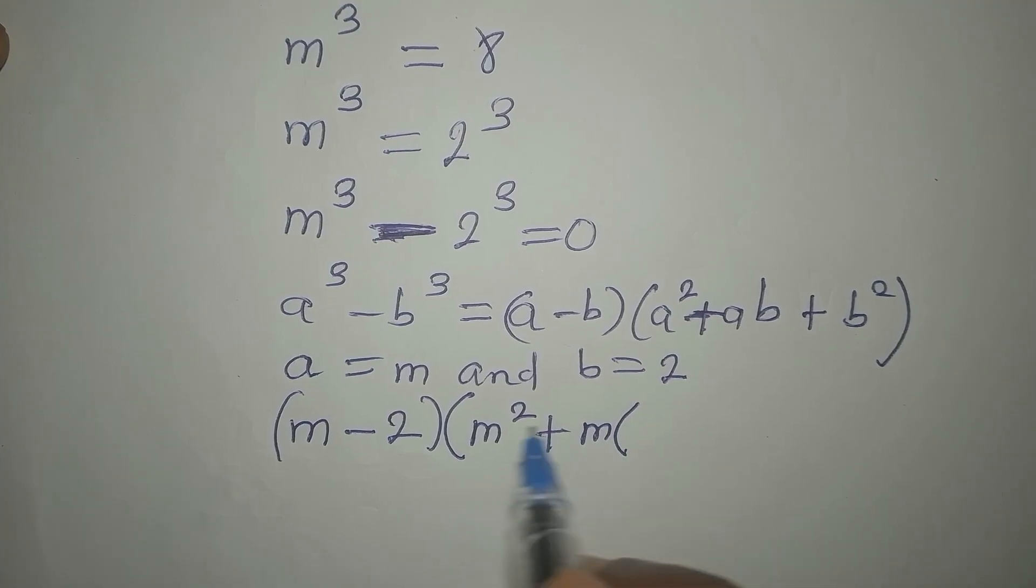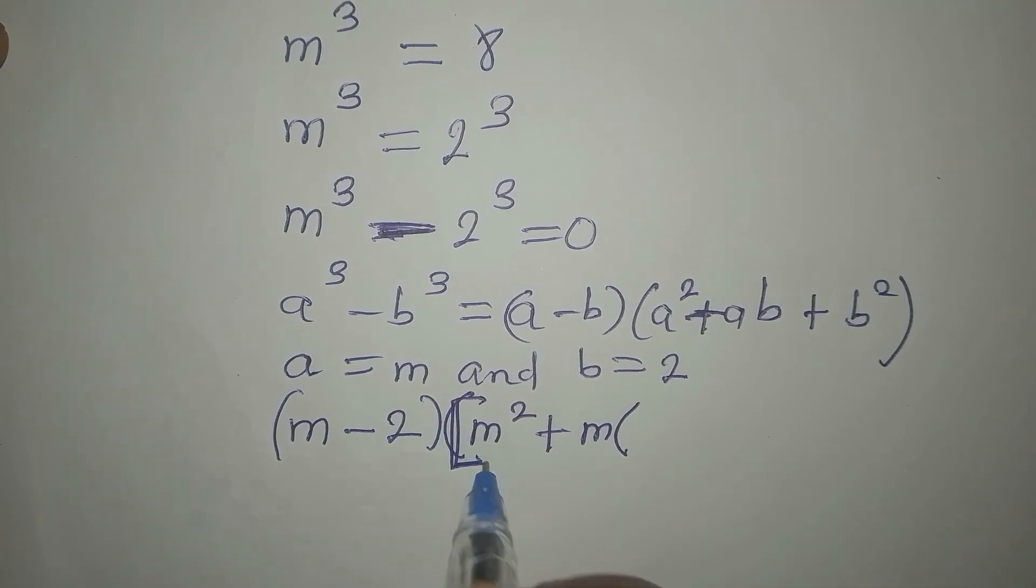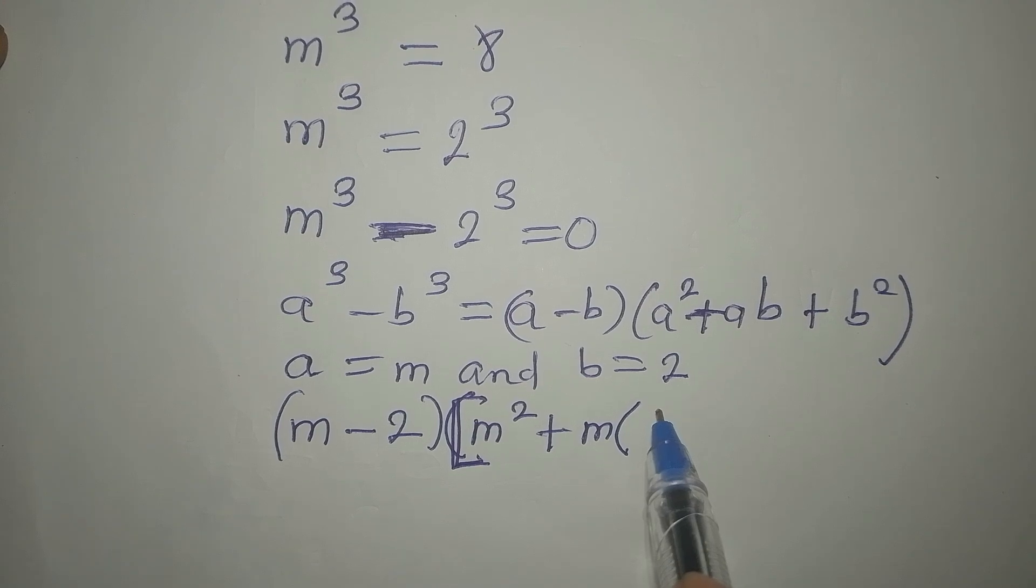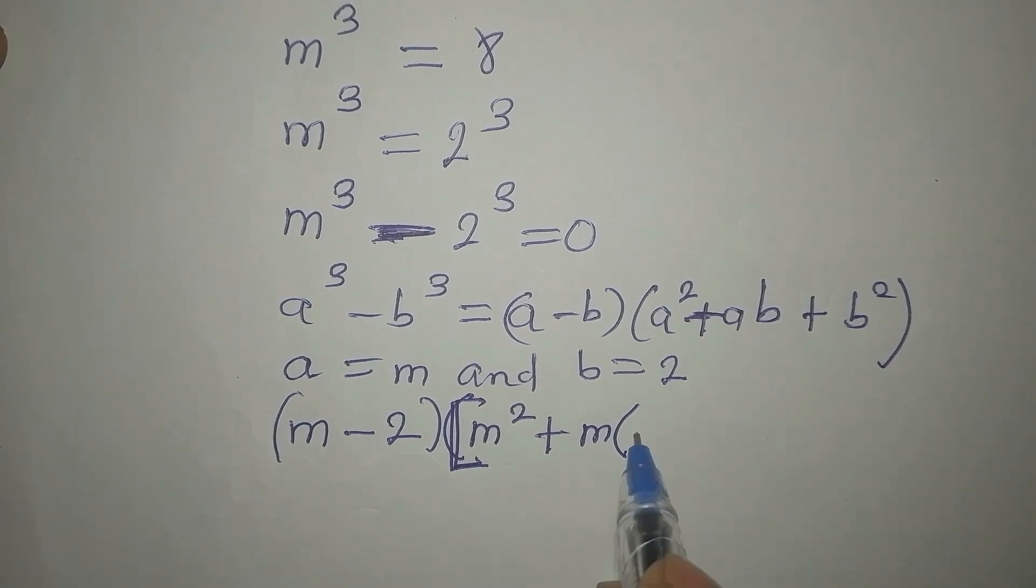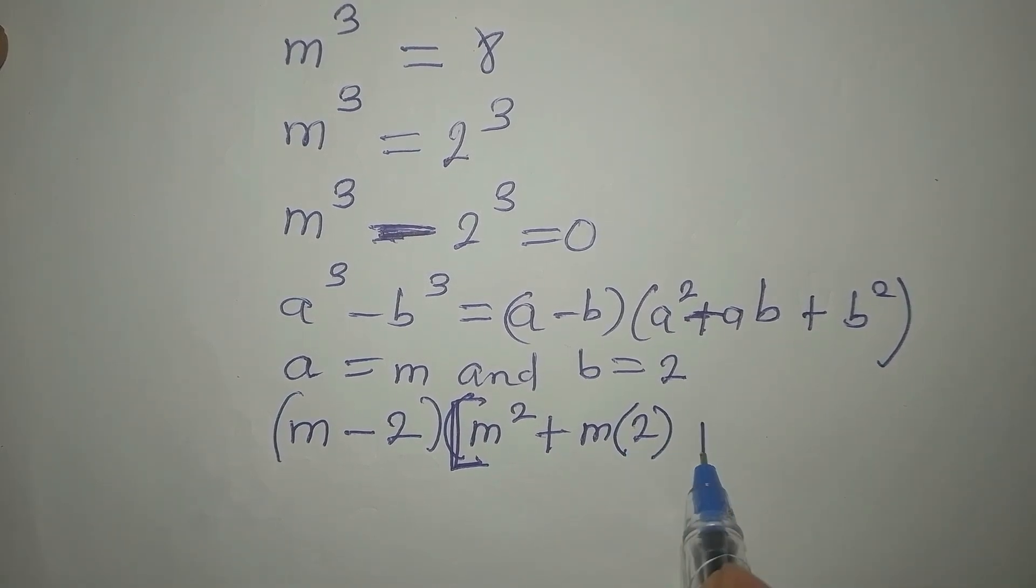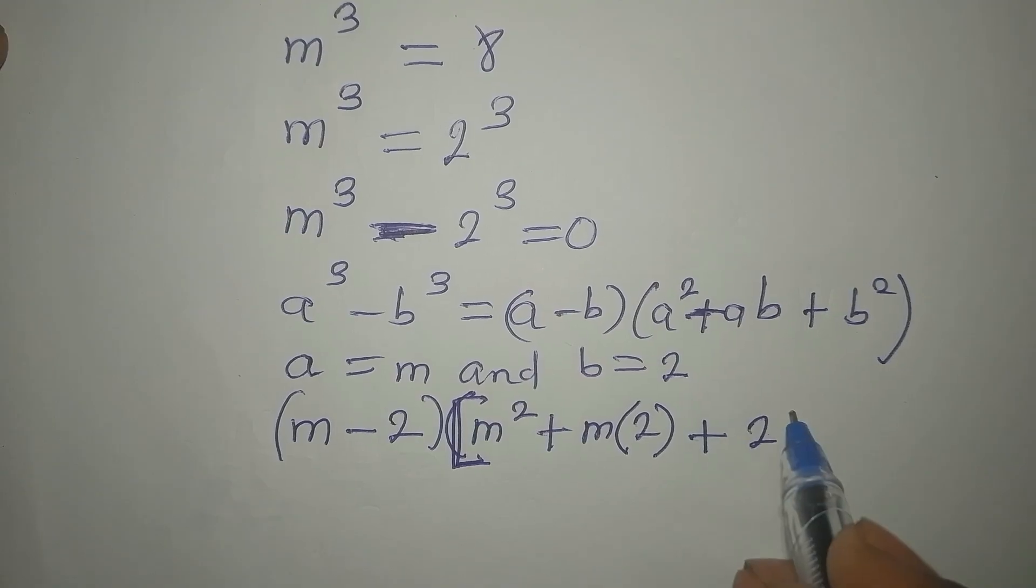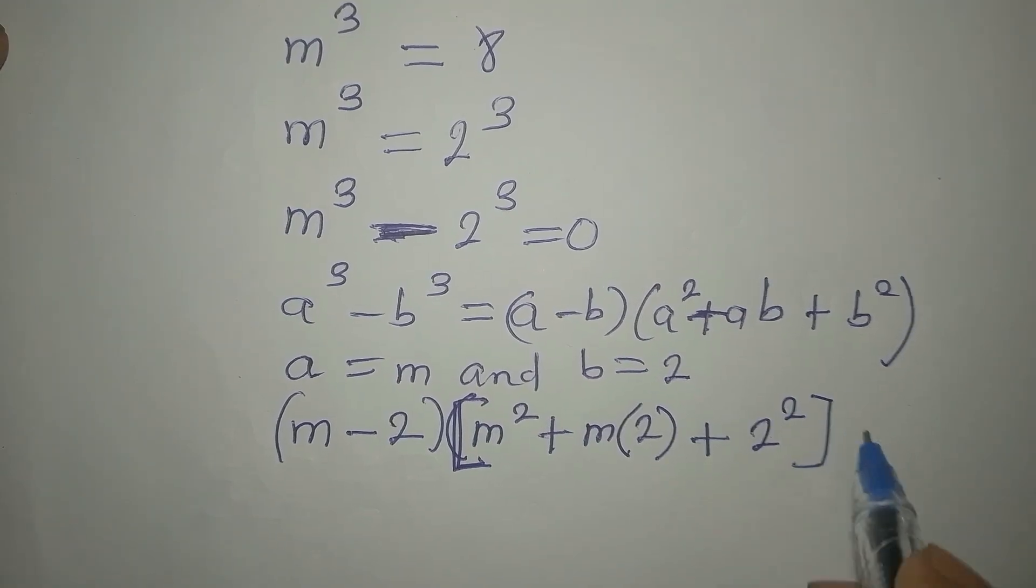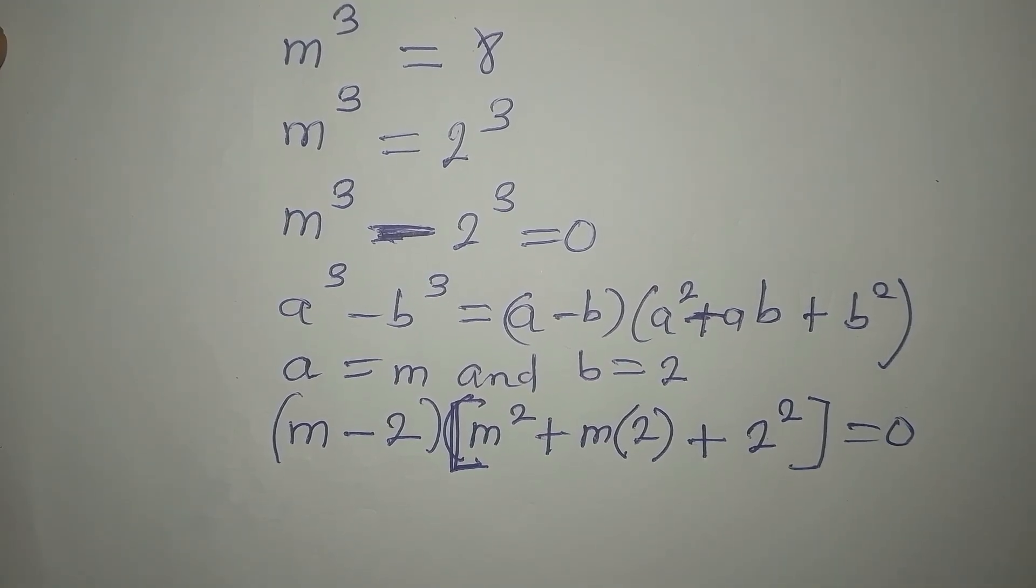Then plus a is m multiply by the b and our b is 2. Then plus b squared, which will now be 2 squared. Then everything equals 0.